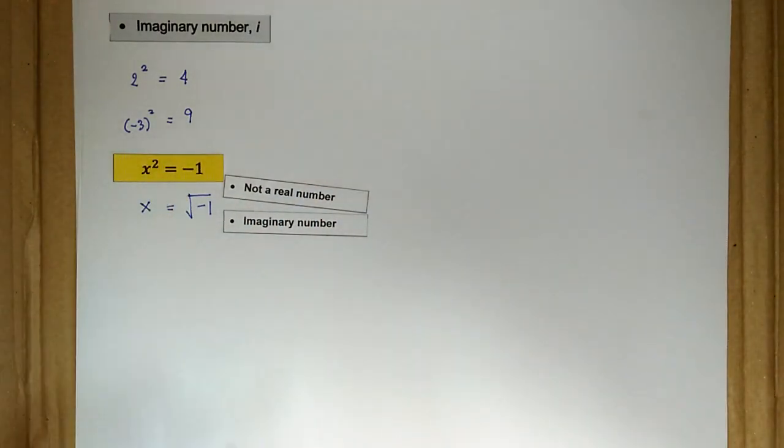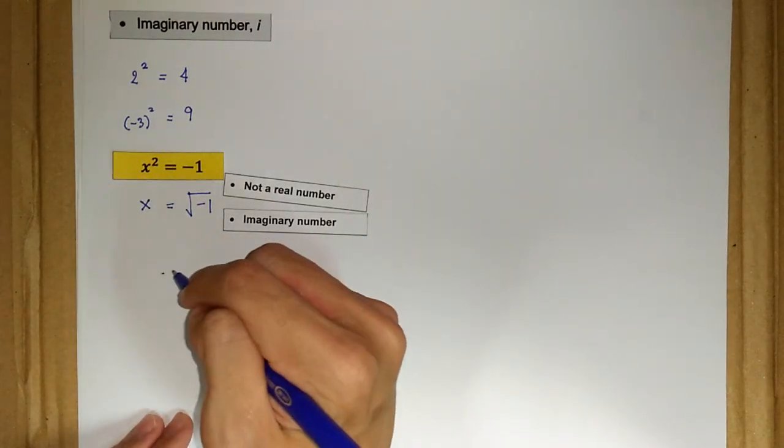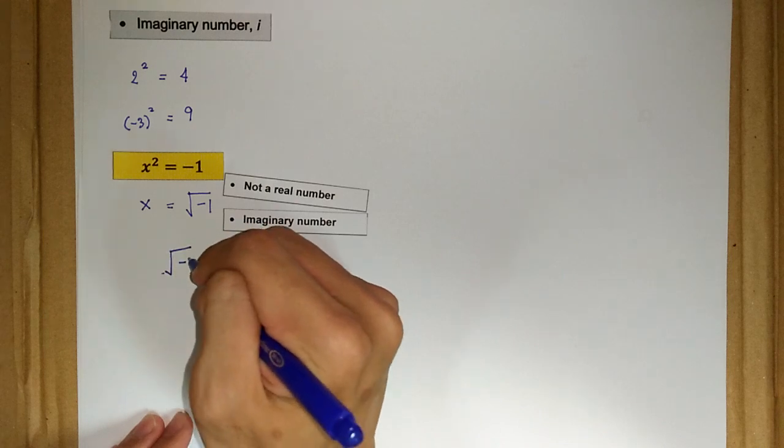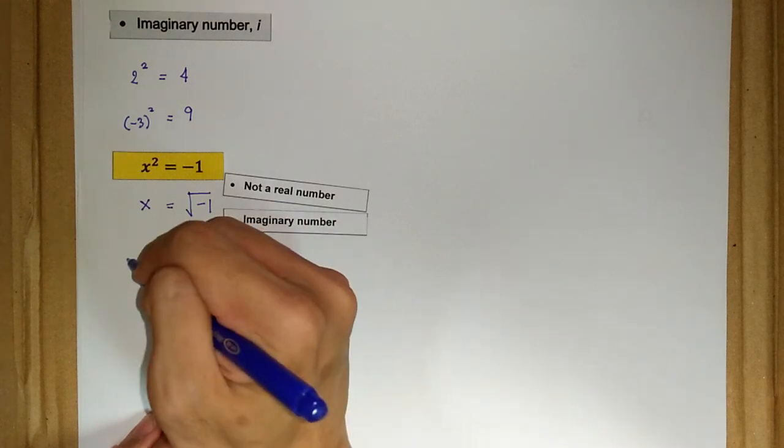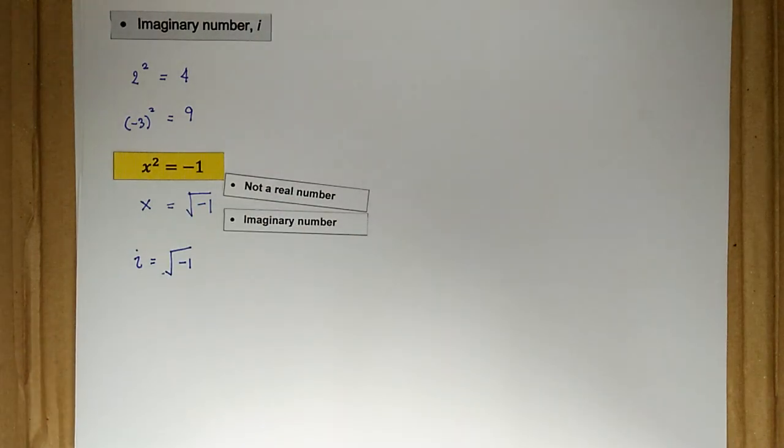We denote the square root of negative 1 with small i, which stands for imaginary number.